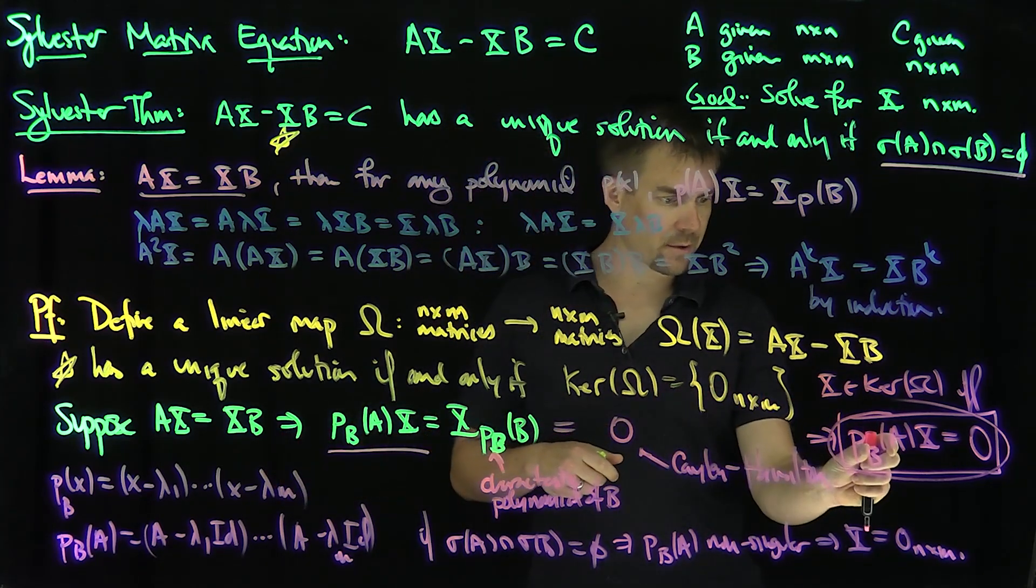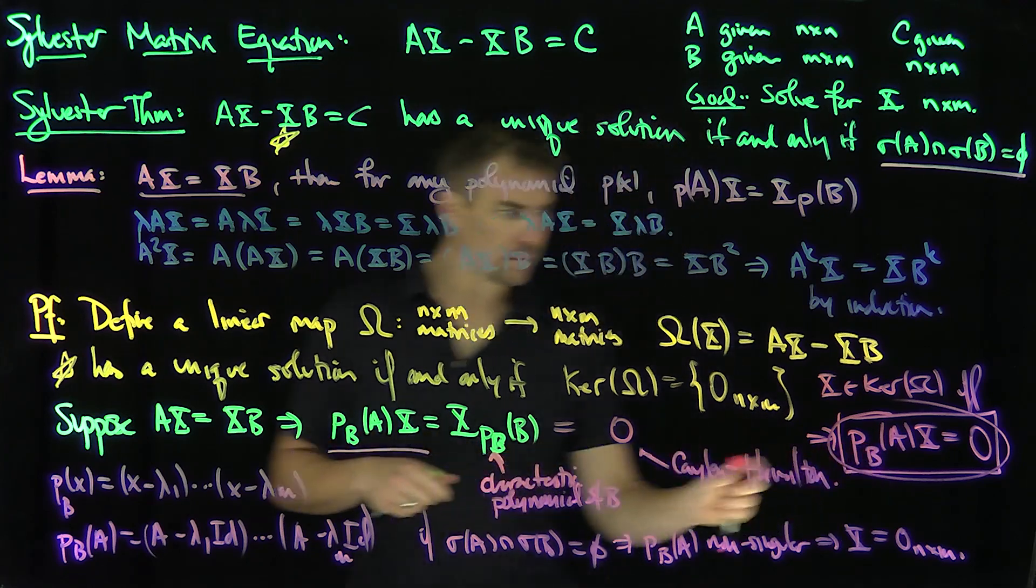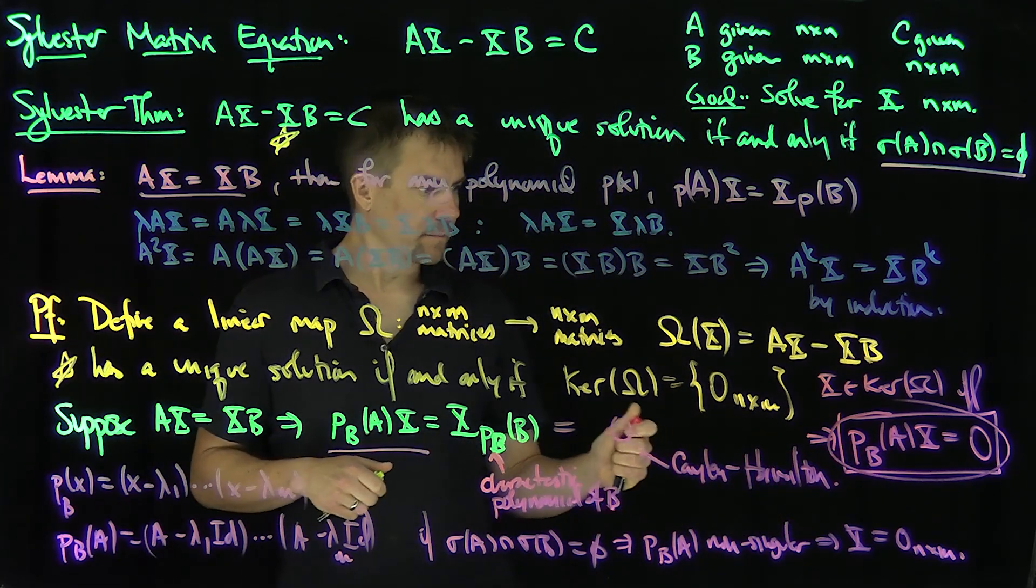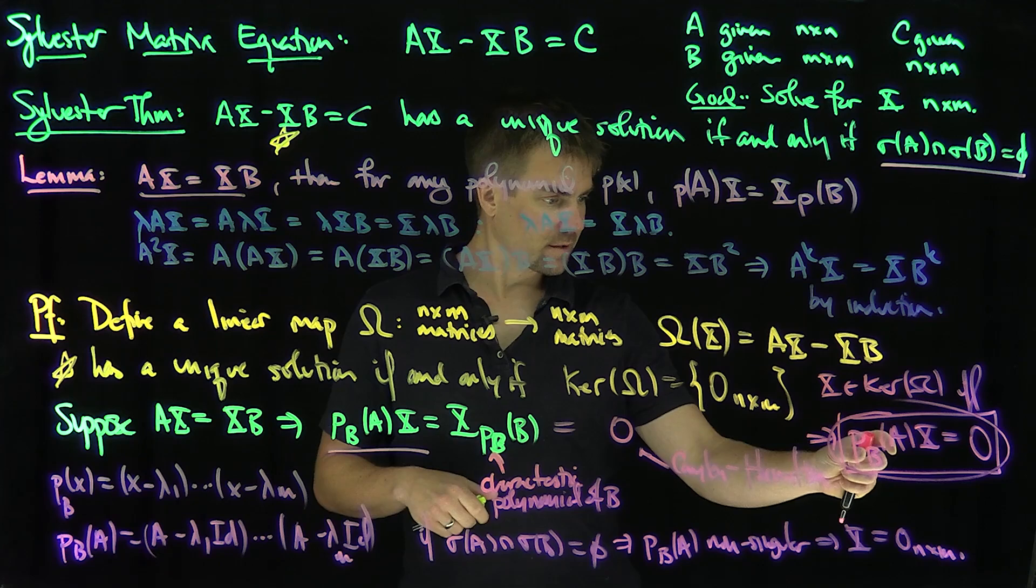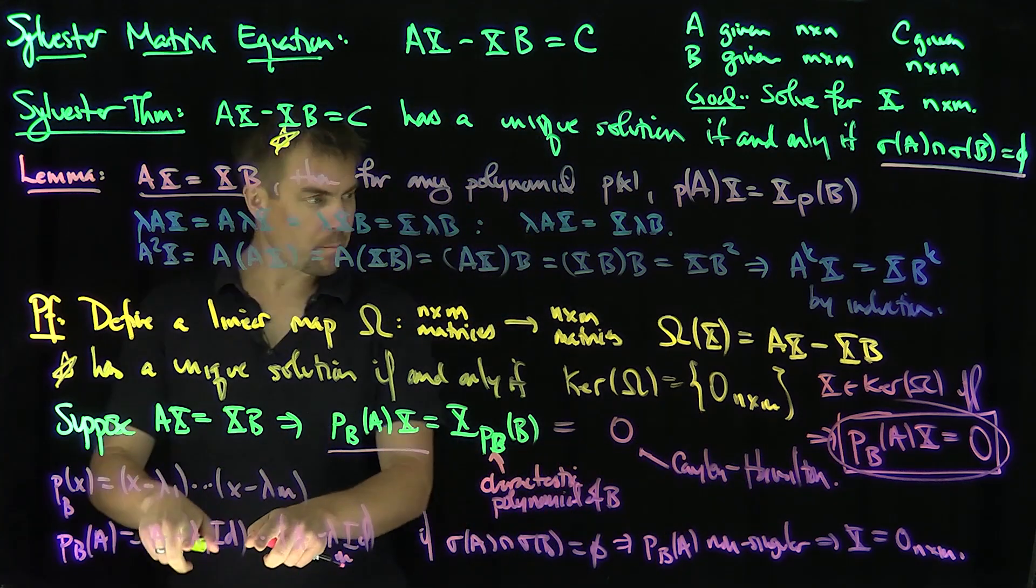Well, if there's only zeros in the kernel, this matrix must be invertible. And if that matrix was singular,